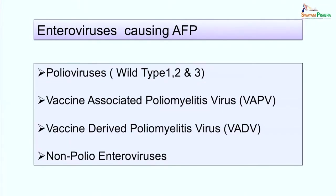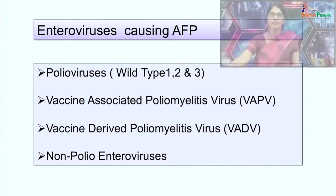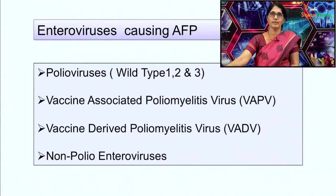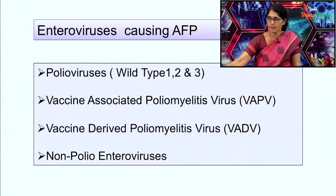Enteroviruses are the most important cause of acute flaccid paralysis. Polioviruses include wild poliovirus types 1, 2, and 3, vaccine-associated poliomyelitis virus, and vaccine-derived poliomyelitis virus. Non-polio enteroviruses include Coxsackie viruses A and B, echoviruses, and some enteroviruses like enterovirus 70 and 71, which are important enteroviruses causing acute flaccid paralysis.